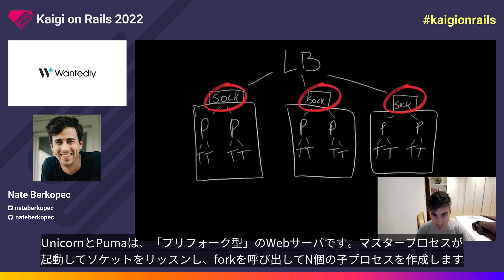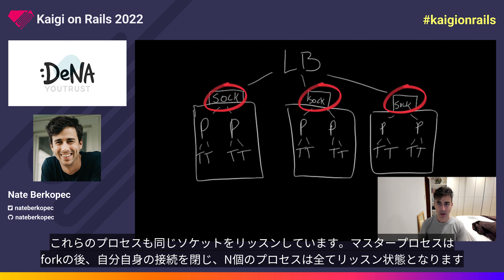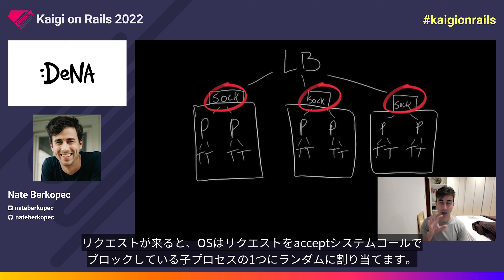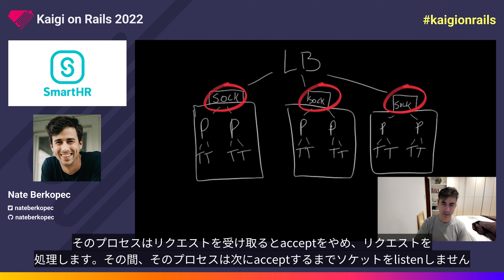Unicorn and Puma are what's called a pre-forking web server. A master process boots, listens on the socket, and then calls fork to create N child processes. These processes are also listening to that same socket. When a request comes in, it's randomly assigned by the operating system to one of the child processes that is free and blocking on the accept system call, ready to pick up the request. When that process gets the request, it stops calling accept, processes the request — meaning it's no longer listening on the socket — and won't get any more requests until it calls accept again.